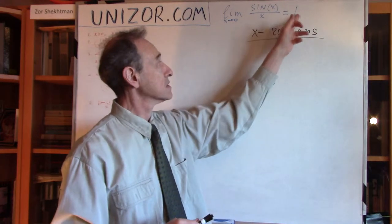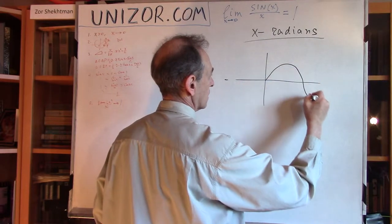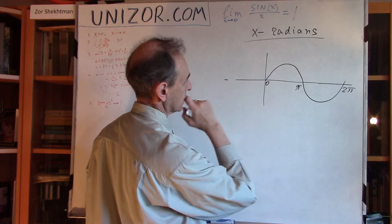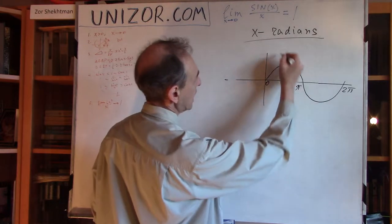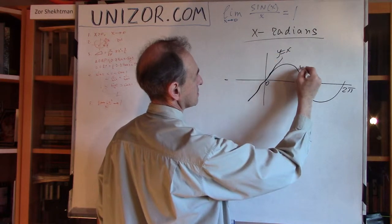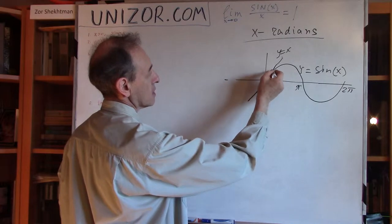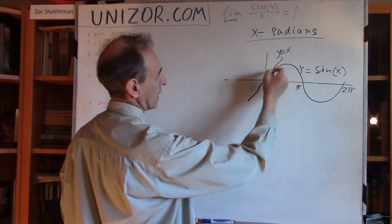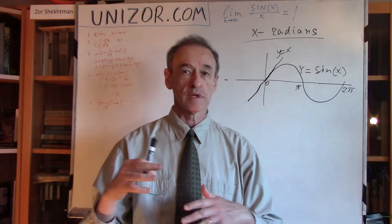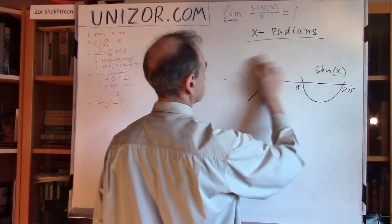So I'm going to prove basically that this limit is equal to one, which means that if you take a look at the graph, this is the sine from zero to two pi. Here, close to x equals zero, the behavior of the function sine of x is very much like the behavior of the straight line, which is y equals x. The closer you go to zero, the more the behavior of the sine of x looks like the behavior of the x itself. So that's what I'm going to prove.